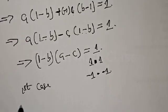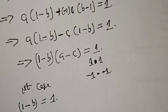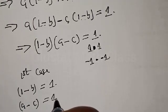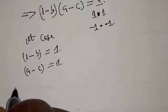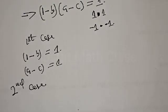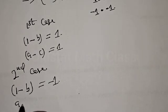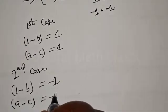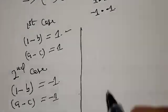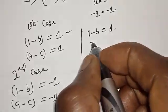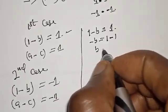The factor pairs of 1 are: 1 times 1, and minus 1 times minus 1. So we have two cases. First case: 1 minus B equals 1, and A minus C equals 1. From 1 minus B equals 1, we get minus B equals 0, therefore B equals 0.